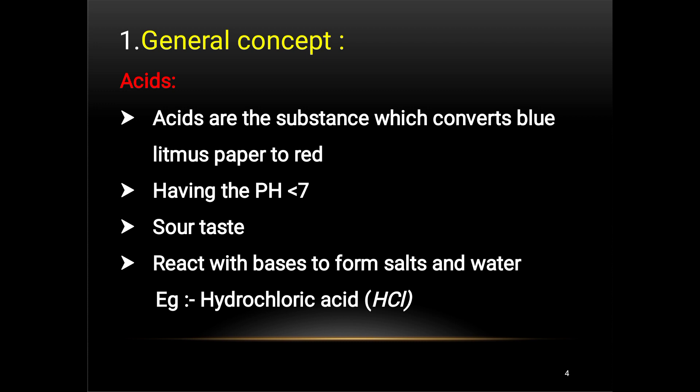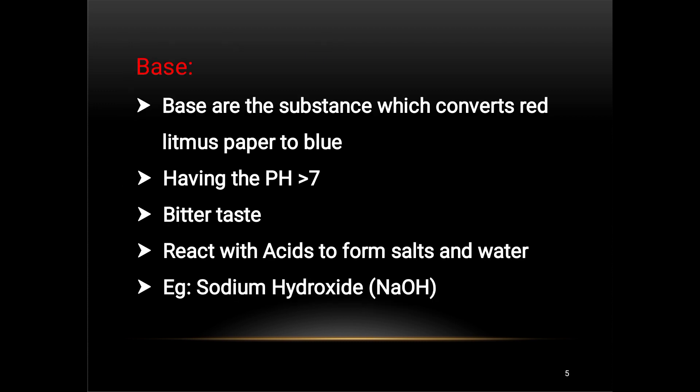According to the general concept, acids are substances which convert blue litmus paper to red, having a pH less than 7. They have a sour taste, and when they react with a base they form salt and water. Example: hydrochloric acid.